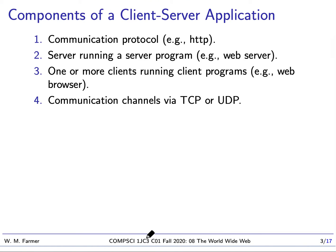If you're setting up a client-server application, these are the components you need: a communication protocol — for web services that's HTTP; a running server program — for web services that's a web server; and one or more clients running client programs — for web services that's a web browser. You also need to set up communication channels via TCP or UDP, usually one channel from client to server, though some protocols could have multiple channels.